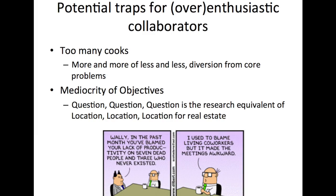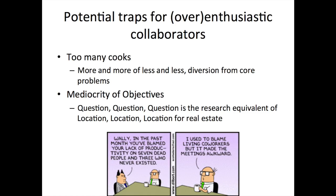Here are some potential traps for over-enthusiastic collaborators. Too many cooks — always stay away from this. When you have too many cooks, you will always find yourself doing more and more of less and less. What you really want as you get better and better is less and less of more and more, and ideally more and more of more and more. It diverts you from your core problems. My core problem has always been the lung — if I simply start testing people's compounds in mouse models, I'm doing a disservice to my own knowledge of asthma.